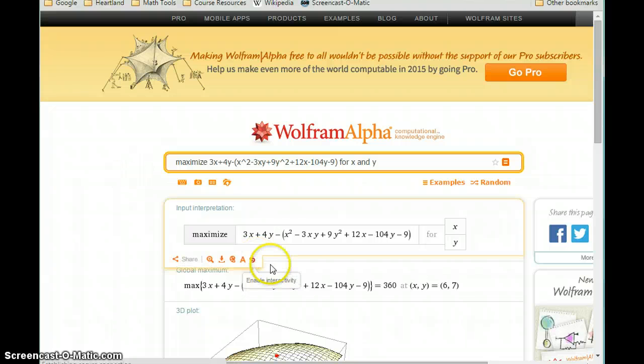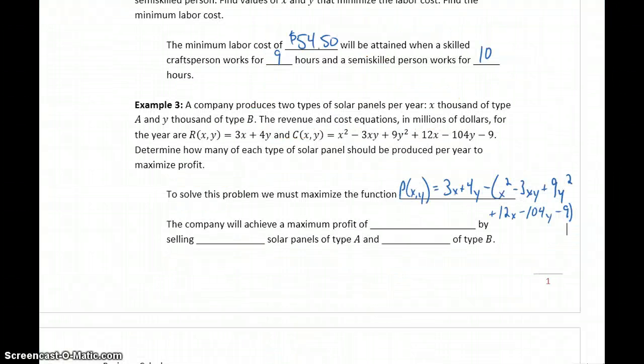And we get a result of 360 when x is 6 and y is 7. But again, that profit function is in millions of dollars, so that 360 means we're generating a profit of 360 million by selling x number of solar panels of type A, which is in thousands, so that 6 becomes 6,000 solar panels of type A, and 7,000 solar panels of type B.